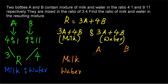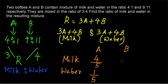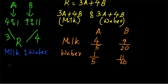The quantity of milk in A is 4 divided by (4+1), which is 4/5, since the ratio is 4:1. The quantity of water in A is 1/5. The quantity of milk in mixture B is 9 divided by (9+11), which is 9/20. The quantity of water in B is 11 divided by (9+11), which is 11/20.